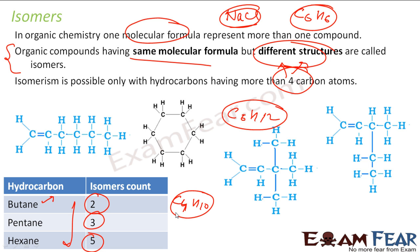For example, C4H10 is butane — four carbons, all single bonds, so it's an alkane. You can draw C4H10 in two ways: one with all four carbons in a straight chain, and the other as a branched structure. Both are butane, so there are two isomers. For pentane, when you find the structures, you'll see that you can draw three. For hexane, you can draw five. The count increases as the number of carbons increases.